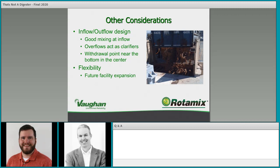Regarding flexibility, you want to look at future facility expansion. Is this process going to change? Vaughan Rotomix comes with a 10-year prorated warranty on the nozzles, and these systems can be there for 20 to 25 years. You've got a 30-year facility plan — where will you be, and do you expect to change the use of this tank? Can we build that into the design so that when you make those changes, you don't have an additional capital cost of replacing everything and relaying piping?